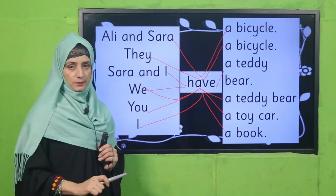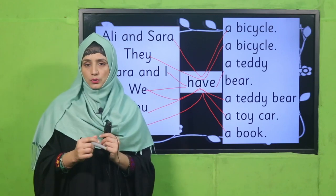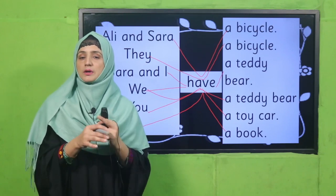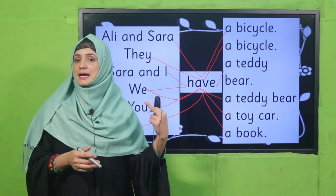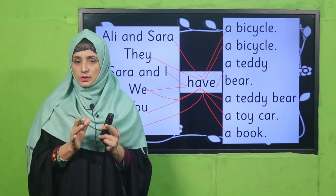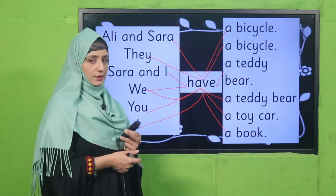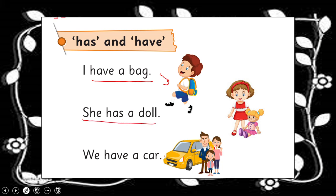These are all plural subjects, so we use 'have' to show possession. For example: 'I have a pen.' 'You have a book.' What do you have in your class? Your teacher has a book, your teacher has a notebook — 'teacher' is a singular noun, so we use 'has.' Now you can see: 'I have a bag,' 'she has it' — singular. 'We have a car' — three persons, so we use 'have.'